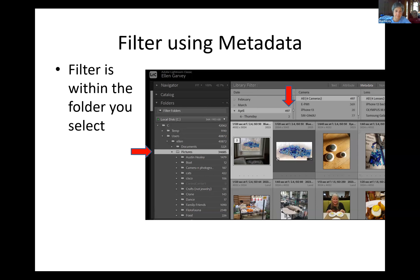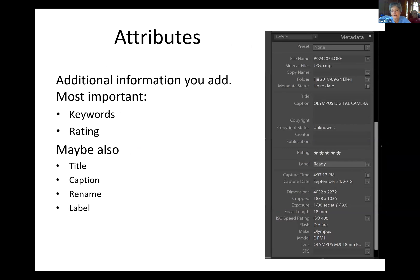What's probably most important are attributes that you can add yourself. The ones most useful are keywords — so you can identify what something is — and a rating. You come back from a trip or a dive or a walk in the woods and you do a quick pass through, putting one to five stars on your photos. You can do a quick search and then look at the ones you thought were best. You can also add a title or caption, and you can rename the file — Lightroom keeps track of what the original file name was so you can get back to it if needed.